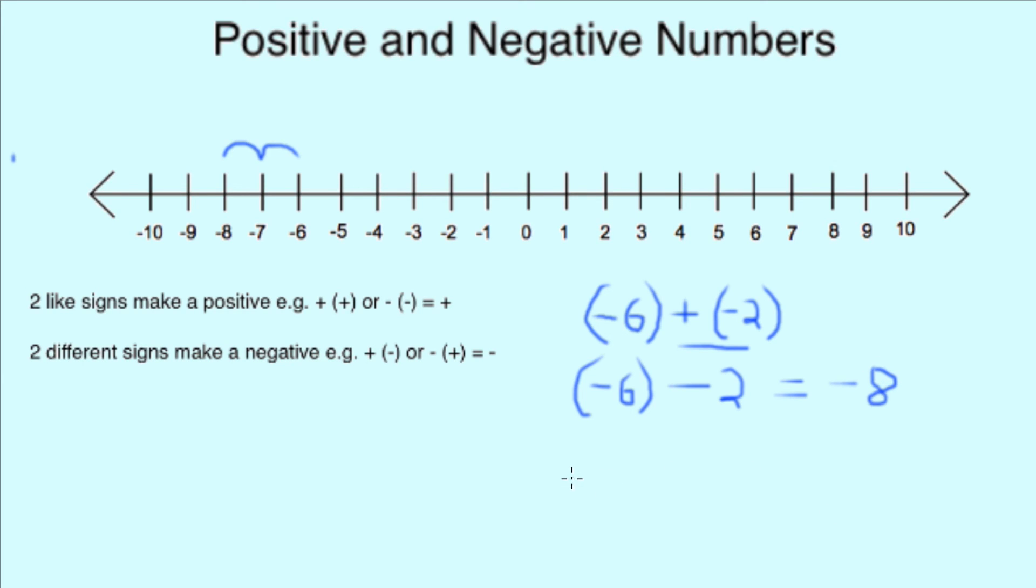So one final example for you. If we do minus 5, keeping that in brackets because it's minus, plus 8, which we remember if it had brackets would be plus 8, we get two similar signs: plus and plus, which make it positive. So it becomes minus 5 plus 8. So we go to our number line again. Minus 5 plus 1, 2, 3, 4, 5, 6, 7, 8 equals plus 3.